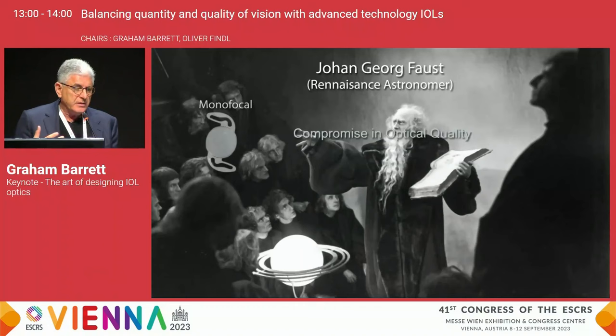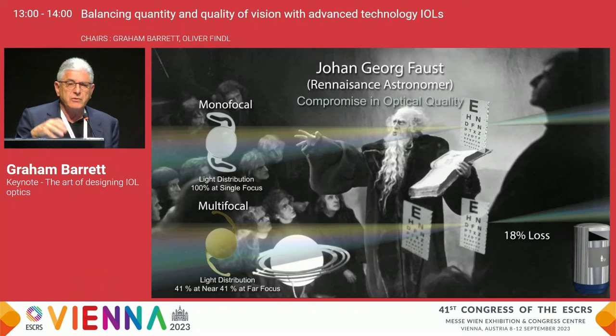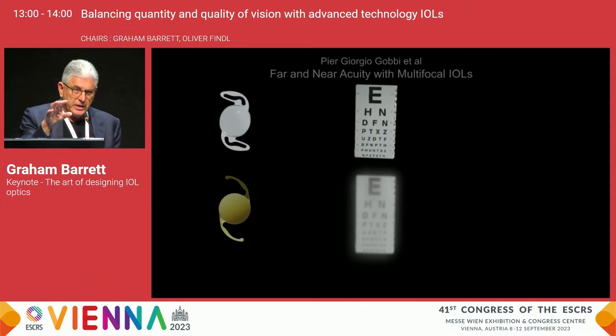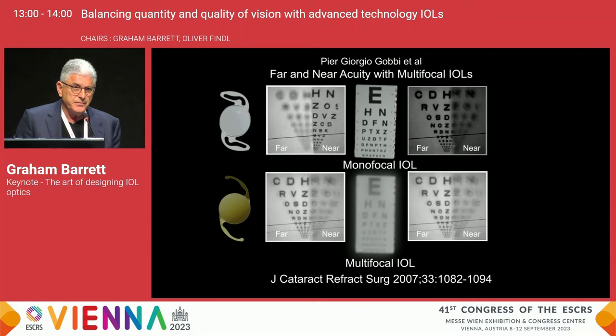When we use a multifocal lens, we compromise. It's like a Faustian bargain, because instead of a single focus, the light is distributed to different focal planes. There's a reduction in light energy, an increase in dysphotopsia, and a decrease in optical quality. If you look at this paper from 2007, these are actual images of a Snellen chart comparing a monofocal optic to a diffractive multifocal optic — you can see the difference in image quality.